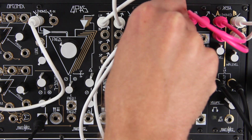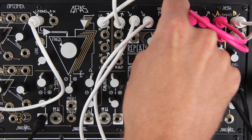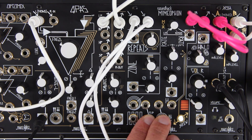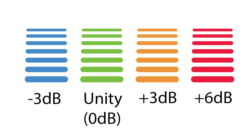While monitoring the sound you will be using, set mix to fully dry, and hold the Flip and Hold buttons to cycle through four options for input gain level. Blue is a -3 dB cut, green is the default Unity gain, orange is a 3 dB boost, and red is a 6 dB boost. When you get to the one you need, just let go of the buttons.